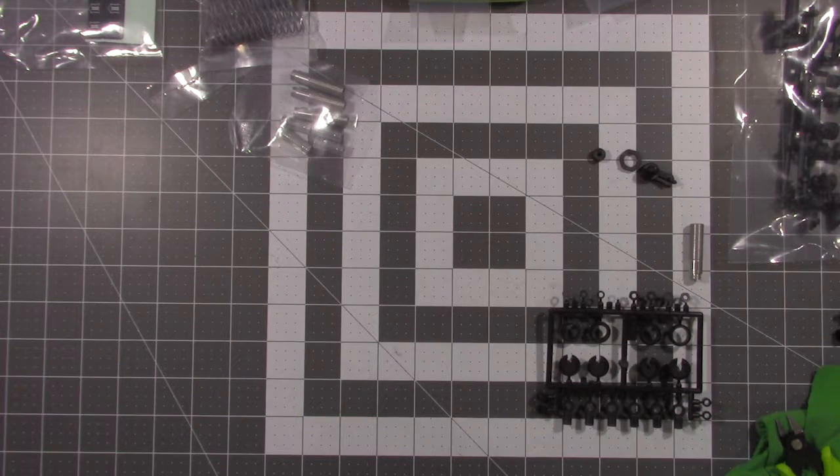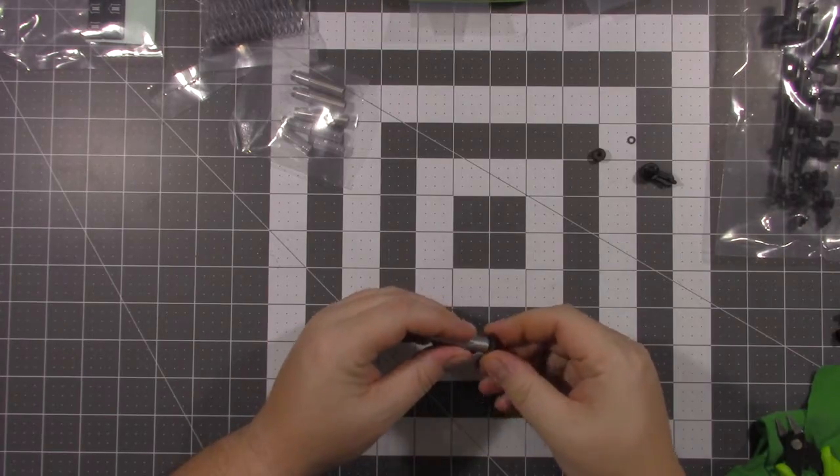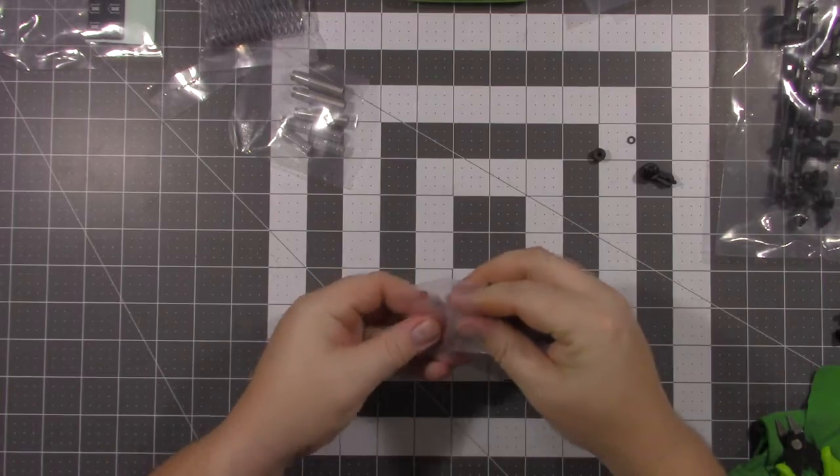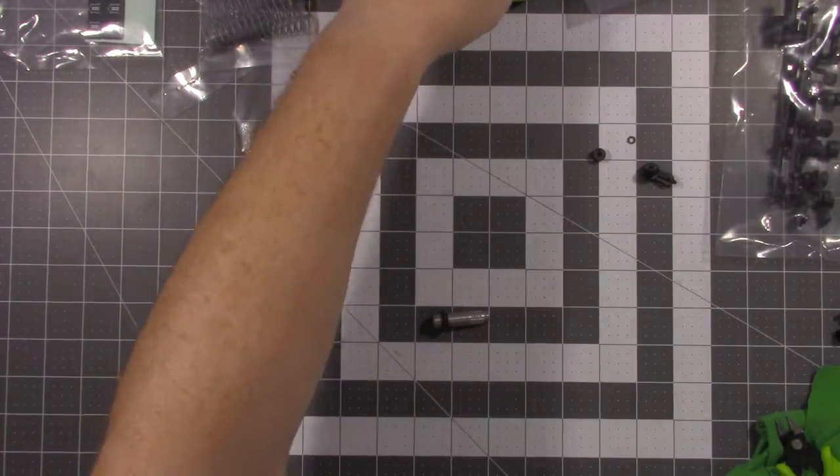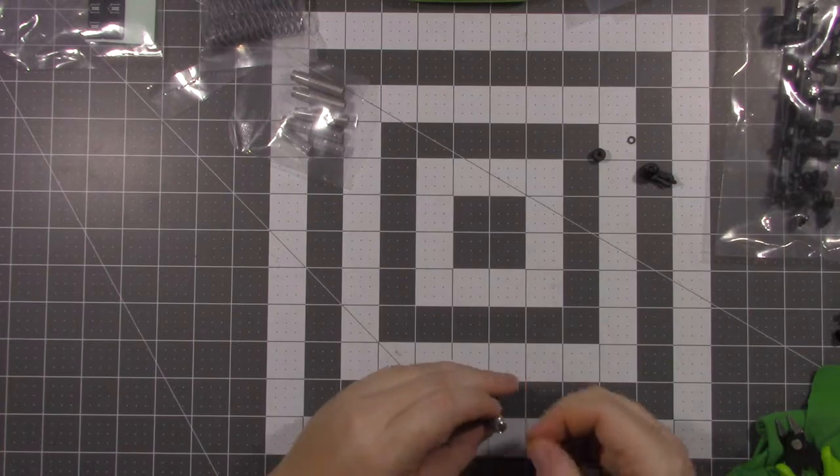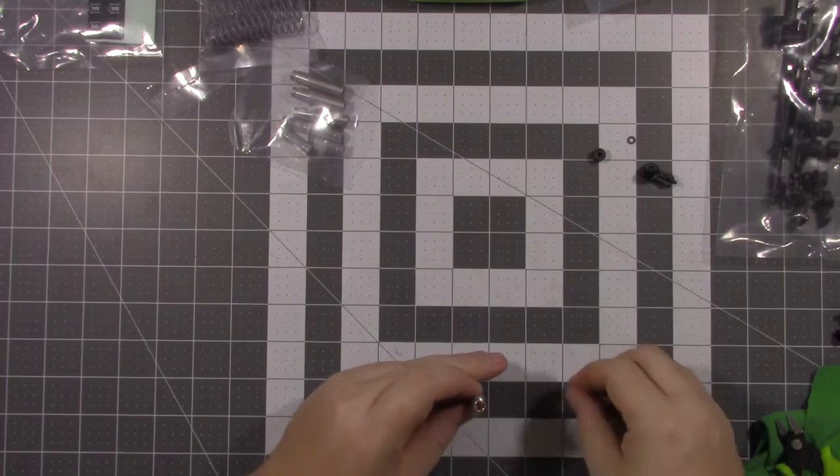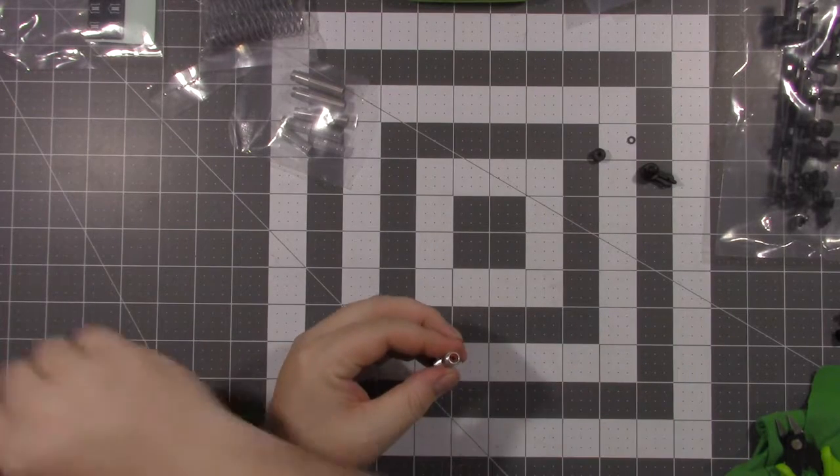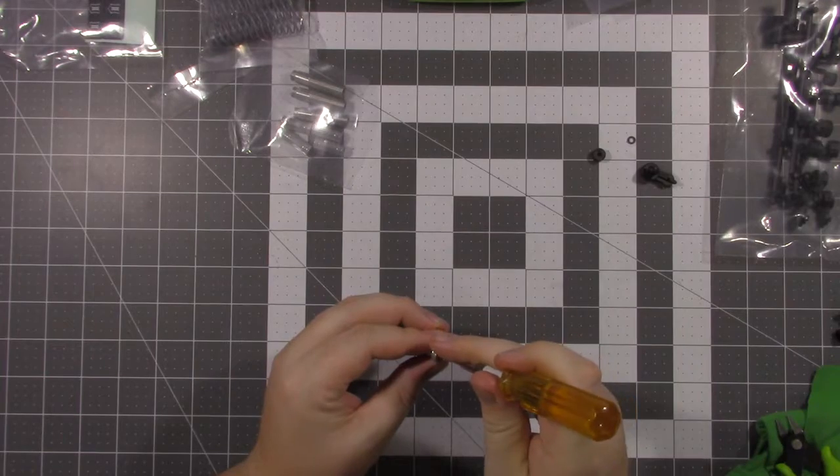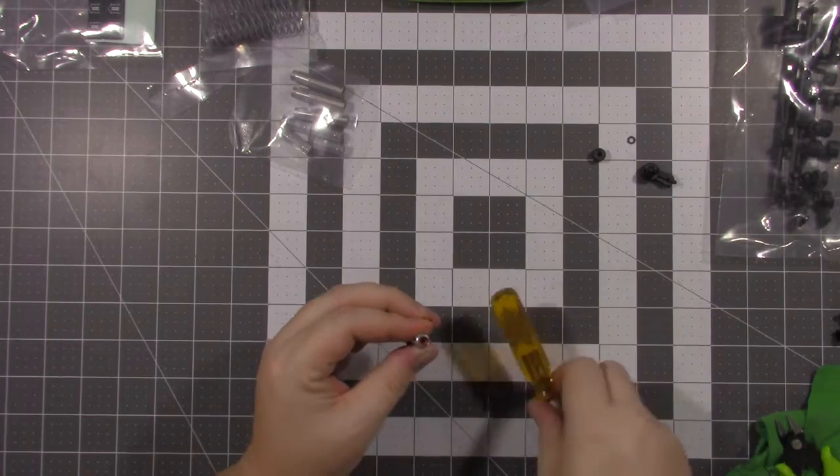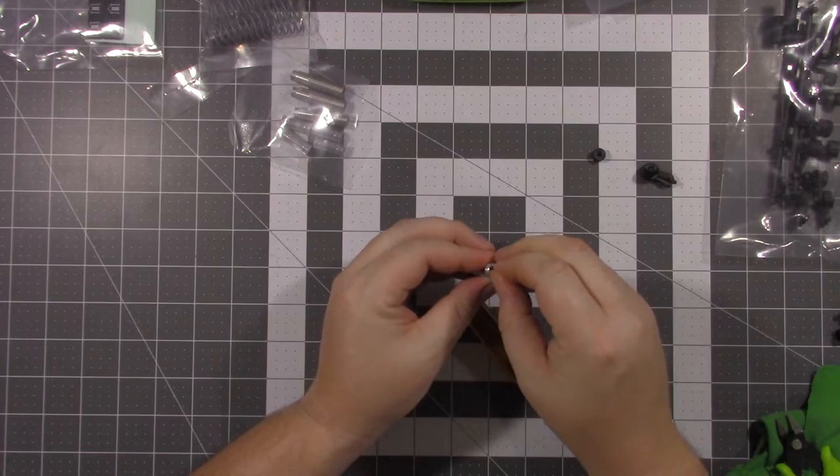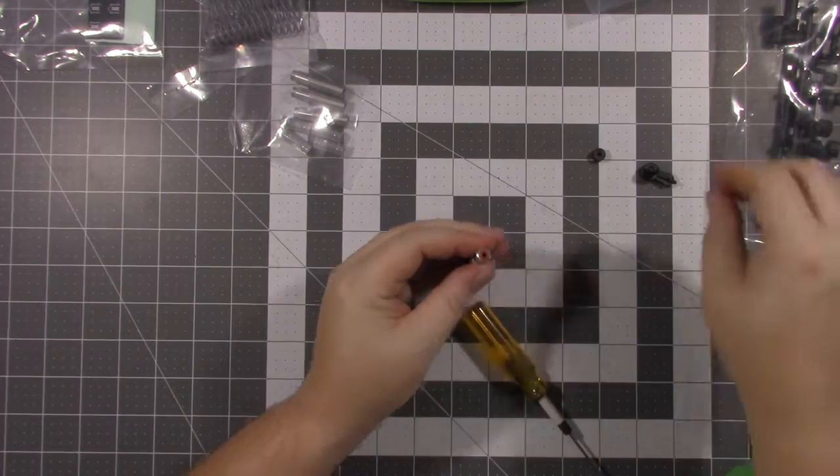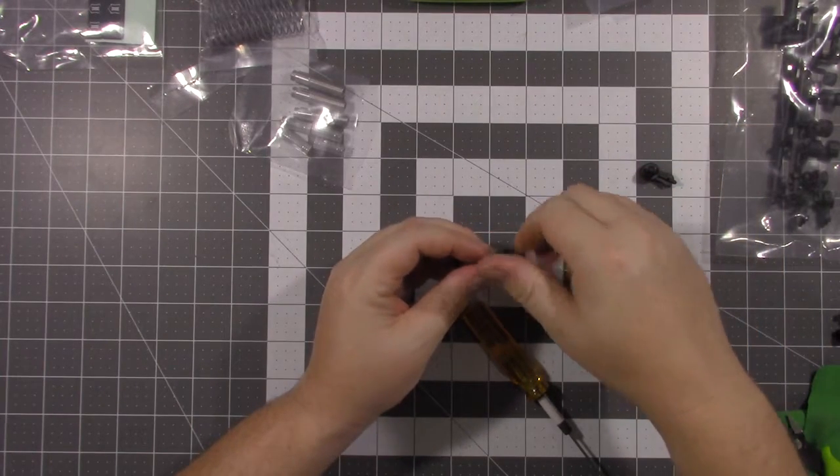Get this started on. Now you're going to need two of the little orange O-rings. Put an O-ring in, and you put your little plastic washer, and you put your second O-ring in, and you take your bottom cap and screw that on.